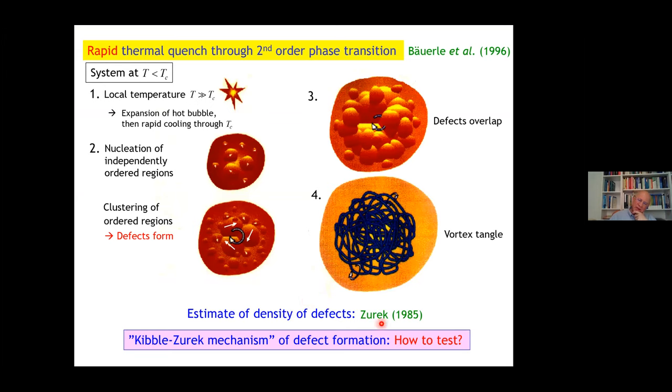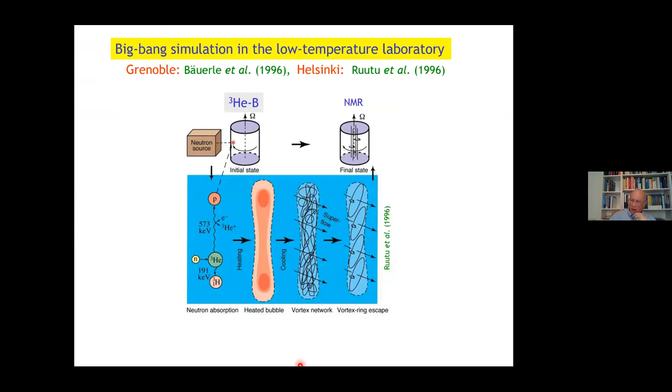But what is the density of such defects? This was clarified by Zurek in 85. Today, the Kibble-Zurek mechanism of defect formation by rapidly going through a phase transition is a very big thing. But 30 years ago, the question is how to test that. Here, superfluid helium-3 was the decisive system.